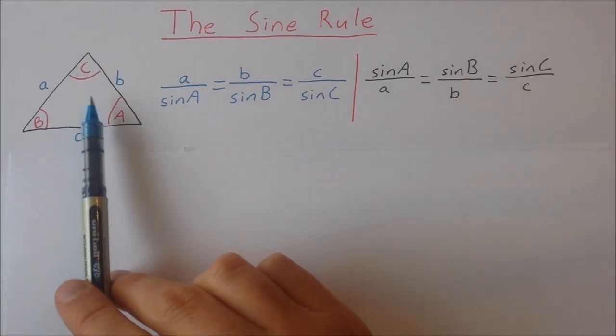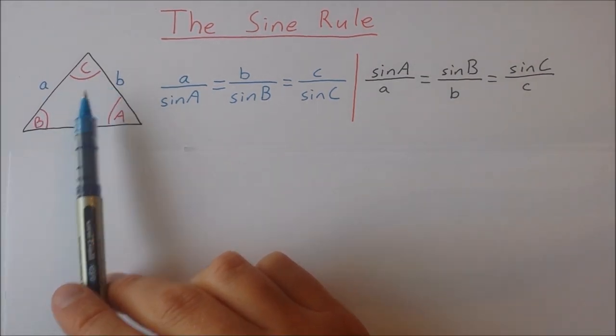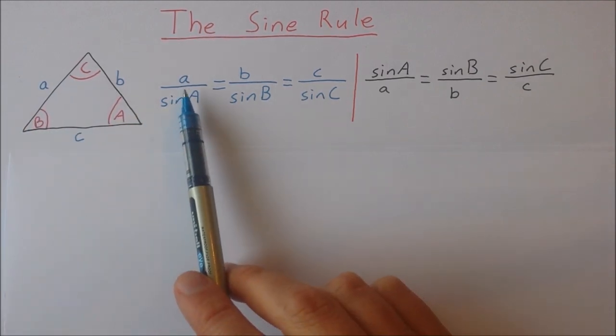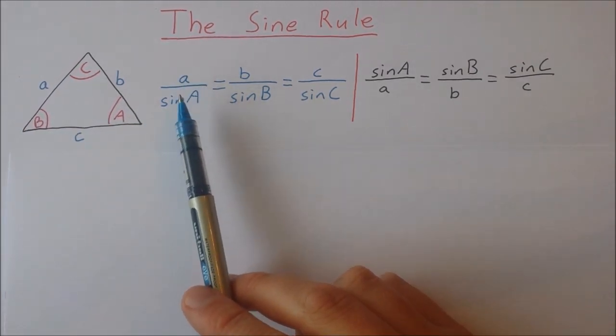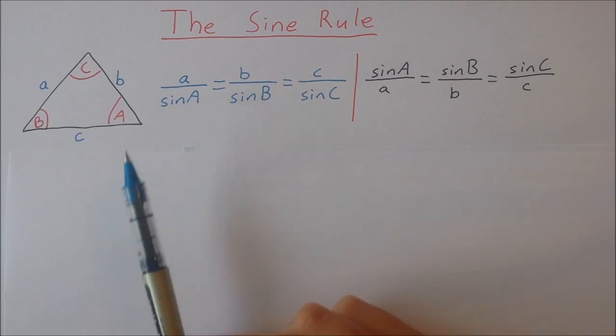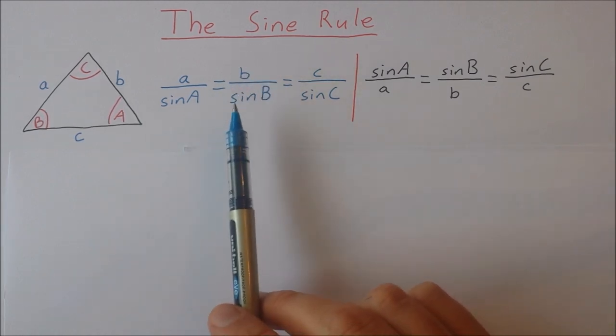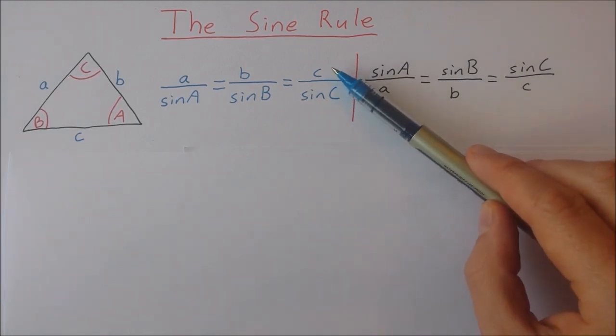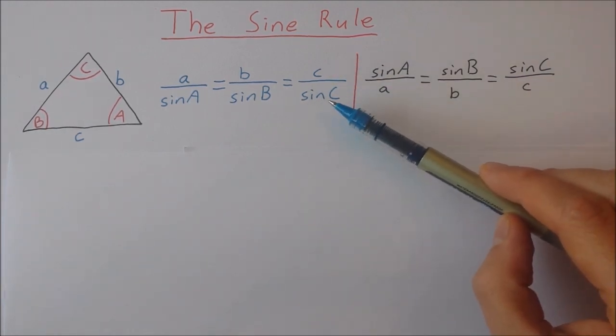So if we have a triangle with sides small a, b, and c and angles big A, B, and C, then the side a divided by the sine of the angle A is equal to the side b divided by the sine of the angle B and it's also equal to the side c divided by the sine of the angle C.